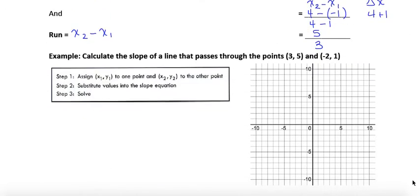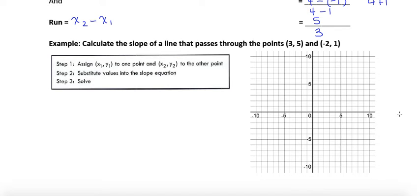Let's go through another example. So we have the points 3, 5, and negative 2, 1. So sometimes you might just show underneath your points that this is going to be x1, y1, and then for your second point, x2, y2. And again, if you switch these up, that's fine. So that's step 1. Assign x1, y1 to one point, and x2, y2 to the other point.